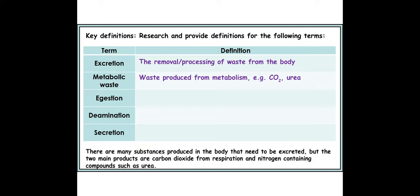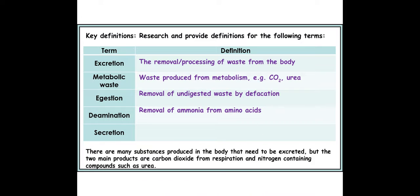Metabolic waste is waste produced by metabolism, which includes carbon dioxide and urea. We have the removal of undigested waste by defecation, which is egestion. Deamination is the removal of ammonia from amino acids, and you do need to know that in a bit more detail, which will be covered in the next couple of sessions.